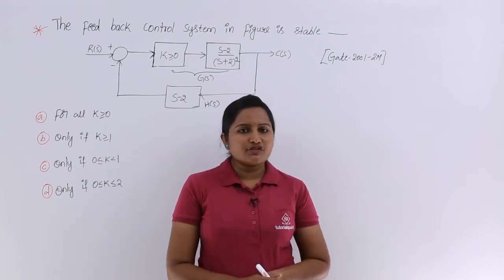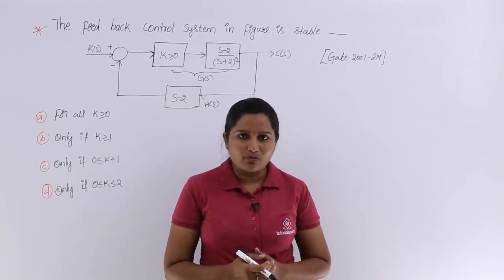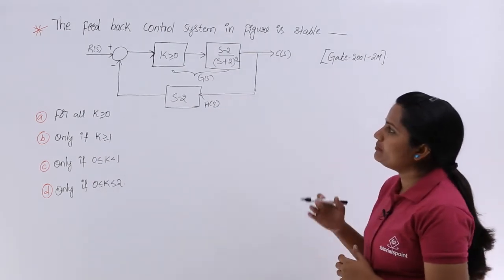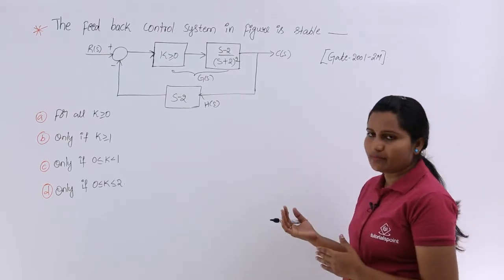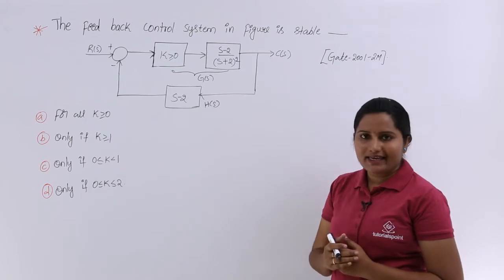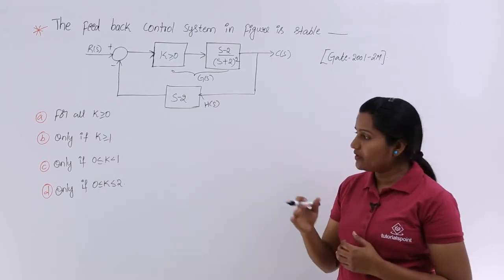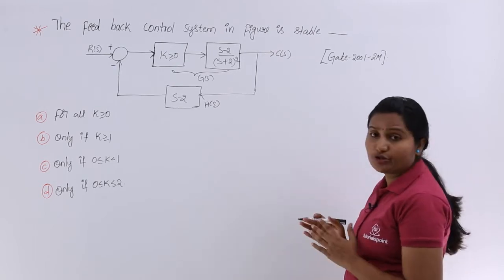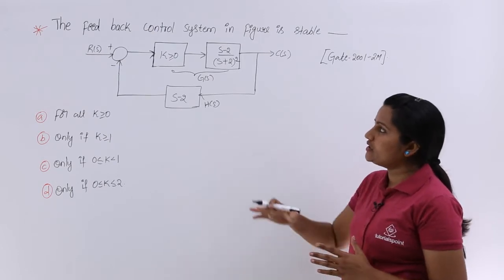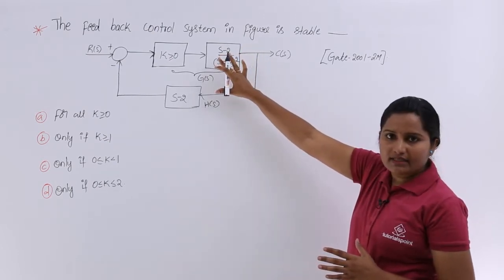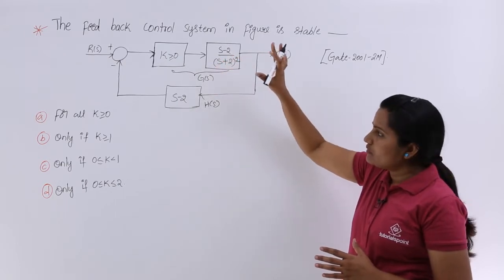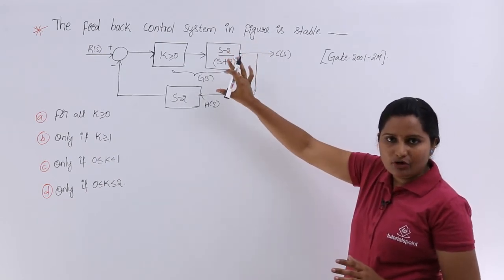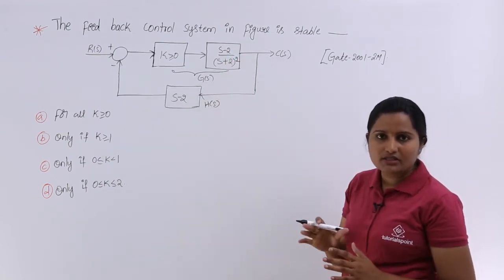In this video we are going to discuss one more GATE problem related to stability analysis. This is also a previous GATE problem. The feedback control system in the figure is stable. We are given options: for all k ≥ 0, only if k > 1, only if 0 < k < 1, or only if 0 ≤ k ≤ 2. Which condition is correct for this block diagram?